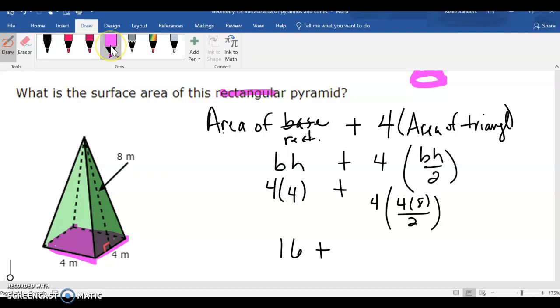4 times 8, this 4 times 8 is 32. 32 divided by 2 is 16, and 16 times 4 is 64. I'm going to add those up, and we're going to get 80 meters squared.